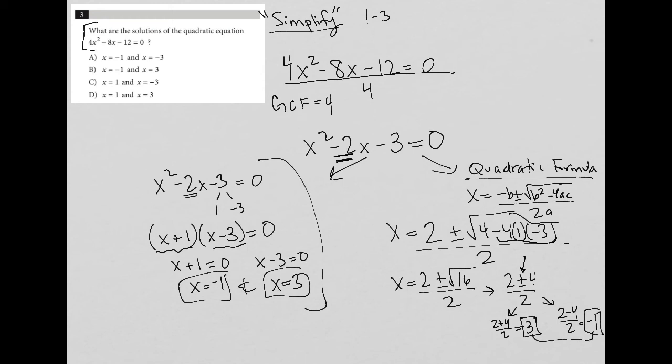And again, in both cases, I get 3 and negative 1, which matches up with choice b.